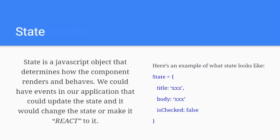State is a JavaScript object. It determines how the component renders and behaves, and we can have events in our application that update the state. I think of state as the way my app is when you first load it — this is what it looks like, this is its state.